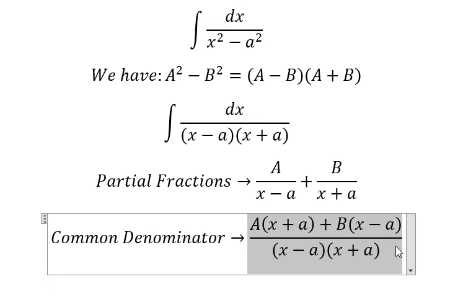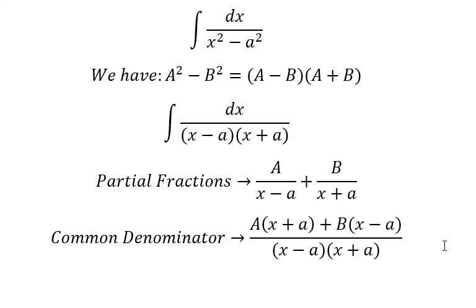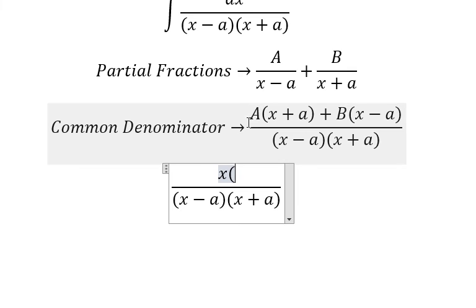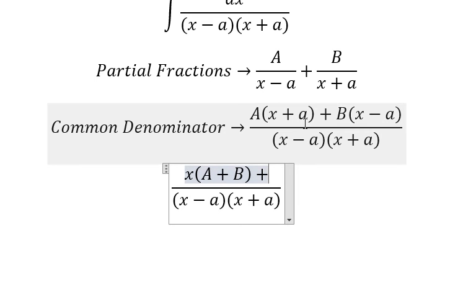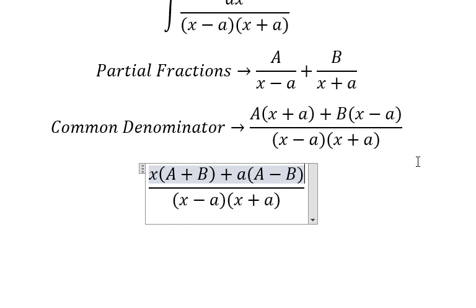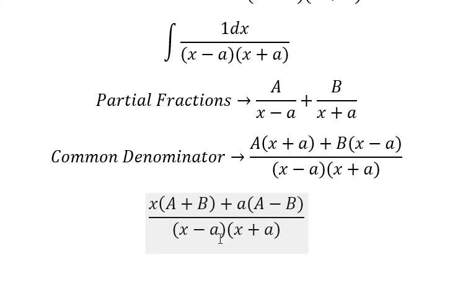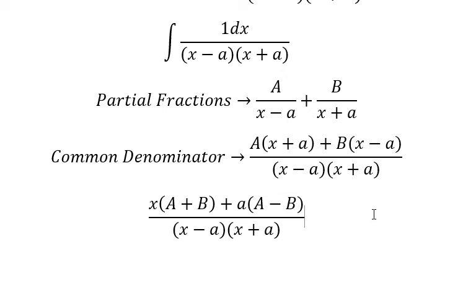Now we need to arrange based on the terms of s. So we have capital A multiplied by s and capital B multiplied by s. We have small a with capital A, and negative a with capital B. The coefficient of s equals one, and since we have no constant s term, A plus B equals zero.